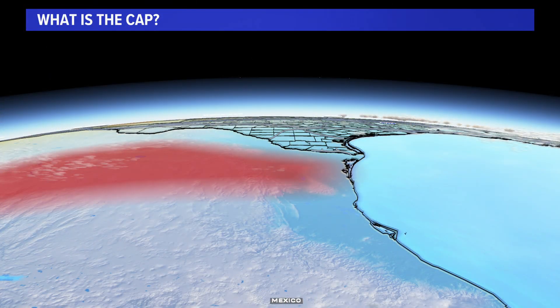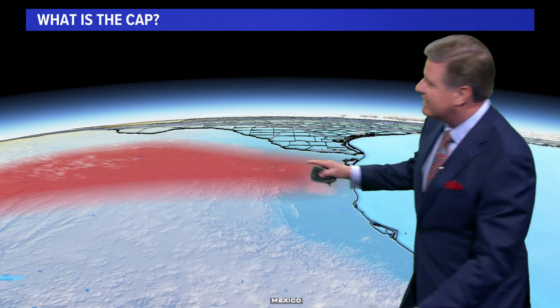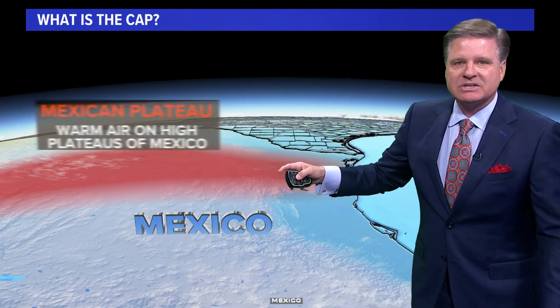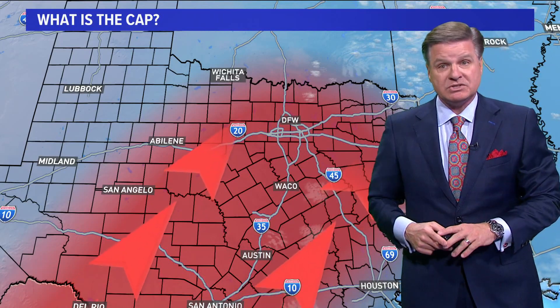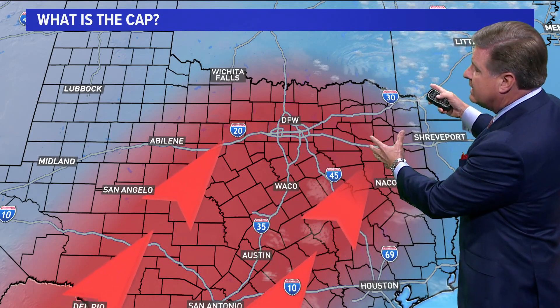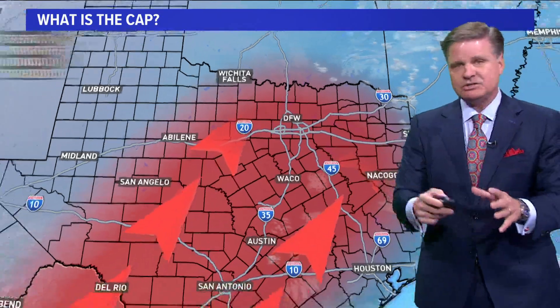I'll also explain to you what it does. So what is the cap? Well, we first have to understand where it comes from. You see that red area that I've drawn here? I've drawn this red area across the high plateaus of Mexico — the Mexican plateau. What do we have there this time of year? We have warm air on the high plateaus of Mexico. It flows to the north and moves right across the state of Texas. If you're from the upper Midwest, East Coast, or West Coast, you don't have a cap because you're not near the source region of the cap, which is the high plateaus of Mexico. We're just north of that source region.